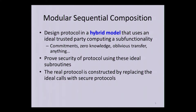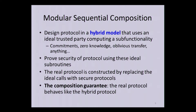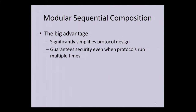In the end I derive a real protocol by replacing those ideal calls with actual secure protocols that compute those sub-functionalities — some secure oblivious transfer, some zero knowledge protocol, and so on. The composition guarantee is that the real protocol will behave like the hybrid one. That's something given to me automatically: as soon as these sub-protocols are proven secure, they behave like ideal calls, and we can analyze the protocol in this much simpler way.